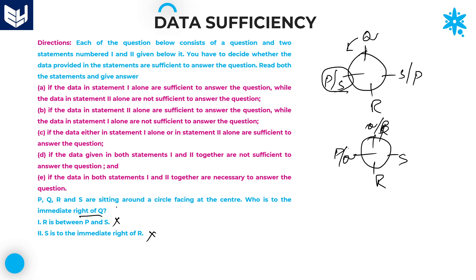Now you can combine first and second both. According to the second statement, S is immediate right of R — so this position is S, and automatically P is at the remaining position. Now the question: immediate right of Q is automatically P. So you will get the answer by combining both statements together. If the data in both statements 1 and 2 together are necessary to answer the question, option E is the right answer for this question.